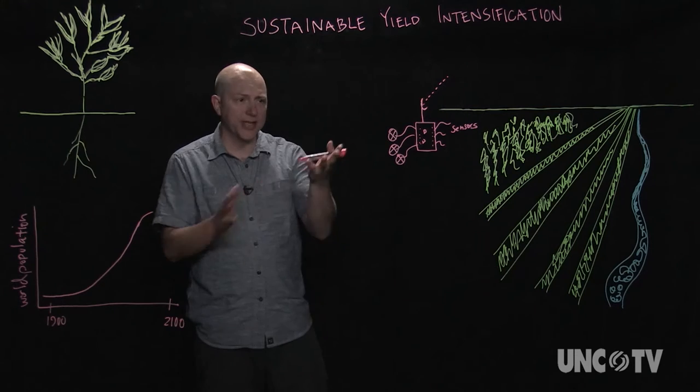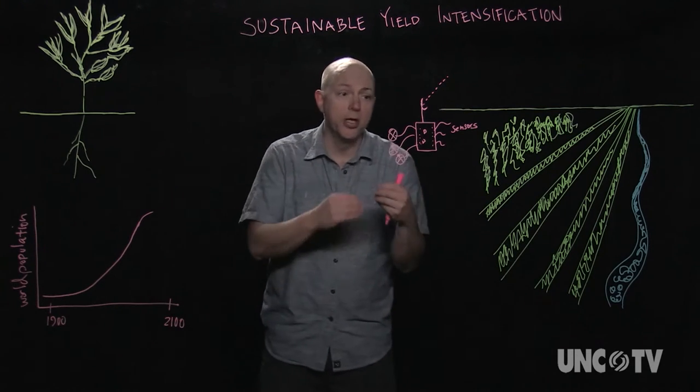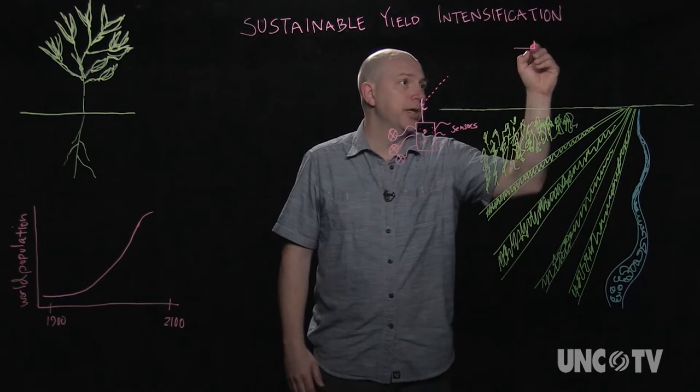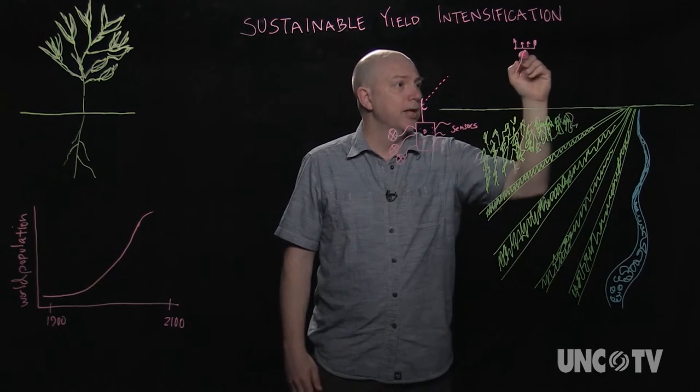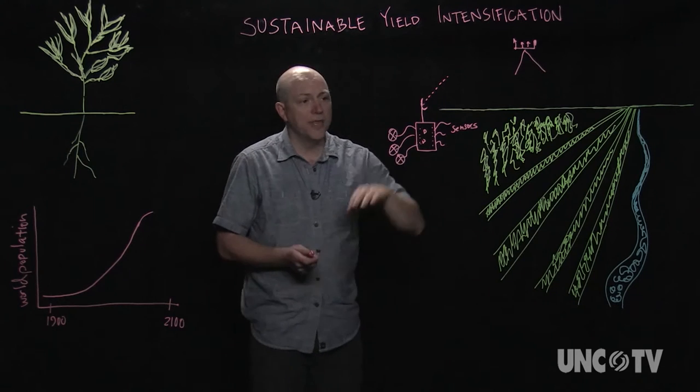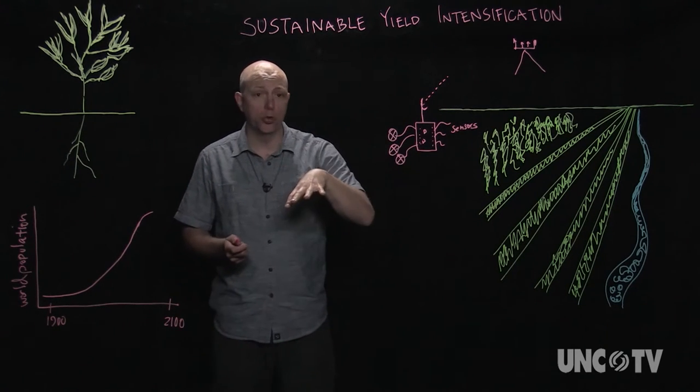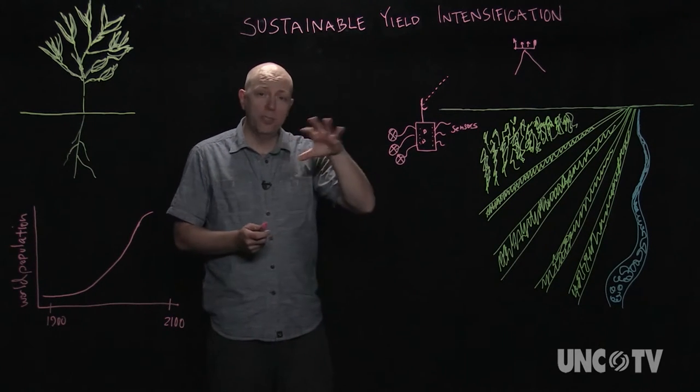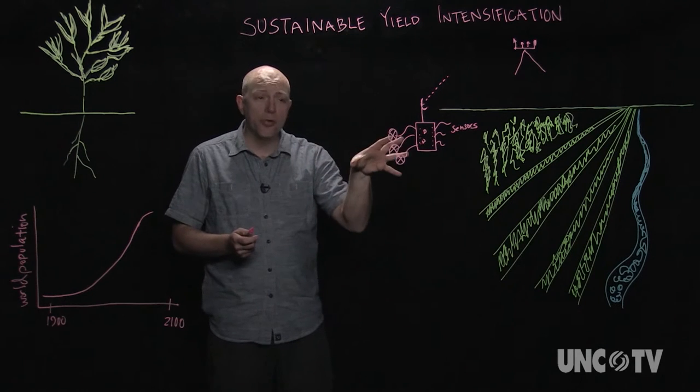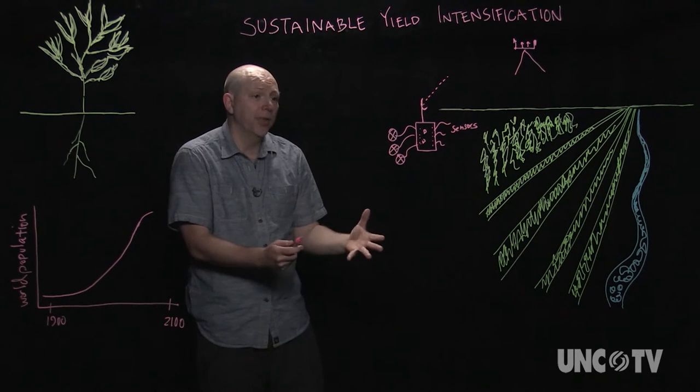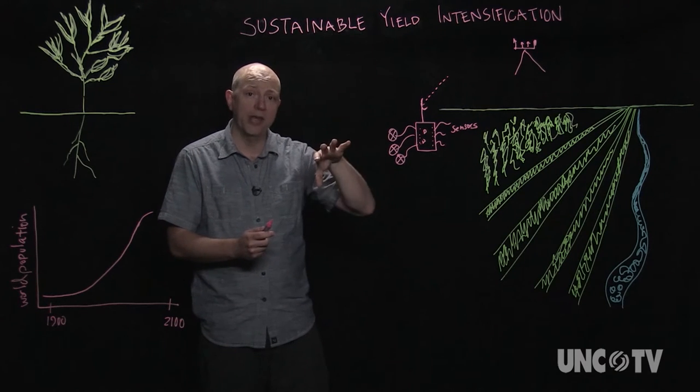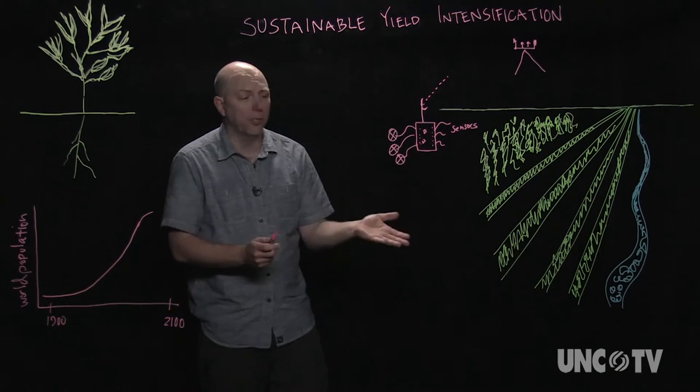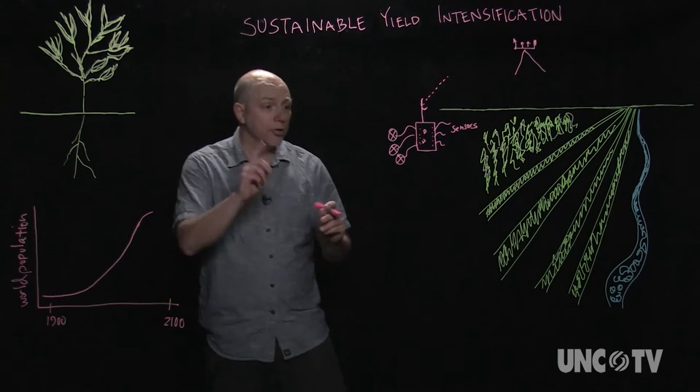Well, one would be a drone, like a quadcopter drone. You've probably seen them that take pictures of fields, and then those images can be brought into Google Earth or Google Maps. You can take near-infrared photography so you can get an idea of plant health, and they help farmers understand the spatial heterogeneity of their fields, where plants are doing well and where plants aren't doing so well.